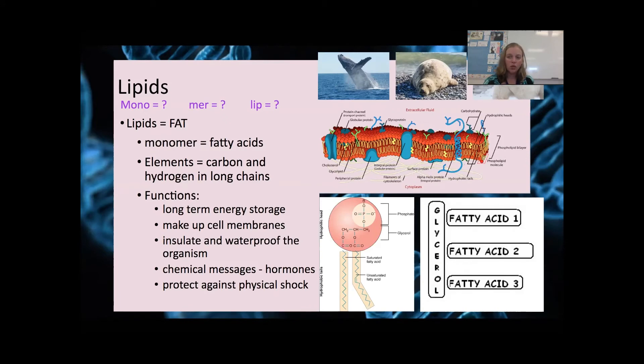Lipids are your fats, your oils, and your waxes. The monomer for your lipids are fatty acids. Again, those are saturated and unsaturated. We looked at the molecular form of those, and we saw carbon and hydrogen in very long chains with just a touch of oxygen at each end.